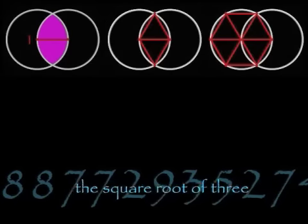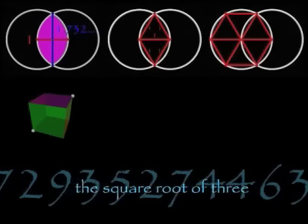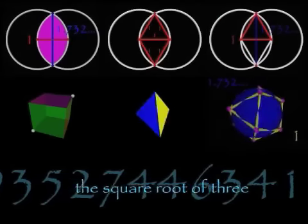In the three-dimensional plane, the square root of 3 can be found in the cube, the tetrahedron, and the unified vector field.